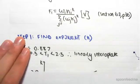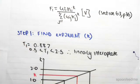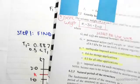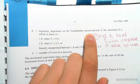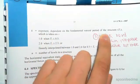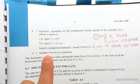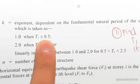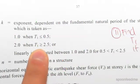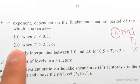So what we do is we go over the page. We have k. So on page 37 we have k equals the exponent dependent on the fundamental natural period t1. So we can see that we're given a range of t1 values and k. When t1 is less than 0.5, k is 1. When t1 is greater than 2.5, k is 2.0.